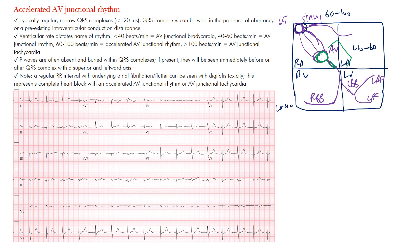Imagine a patient on a beta blocker controlled at 65 beats per minute, and there's a focus in the AV junctional region firing at 70 beats per minute — just above that intrinsic rate but a little faster. That's where we get the accelerated AV junctional rhythm from. It's a typical regular narrow QRS complex rhythm.